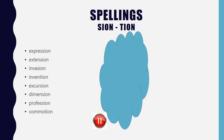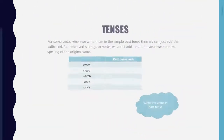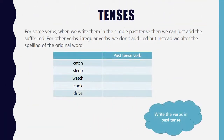Tenses. For some verbs, when we write them in a simple past tense, we're just adding the simple suffix -ed. But by now we know that there are also lots of irregular verbs. So we don't add -ed, but instead the original word is actually altered.